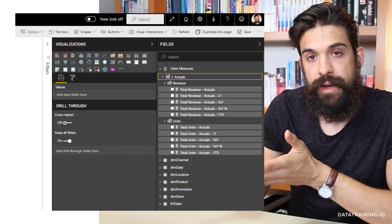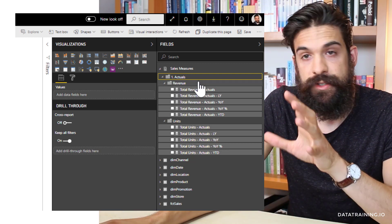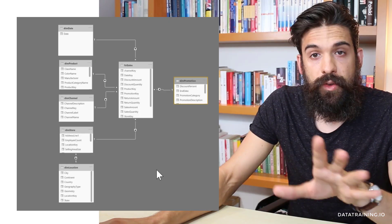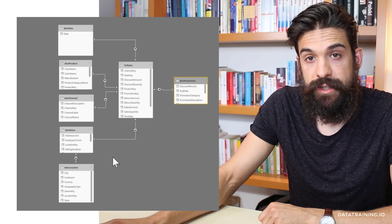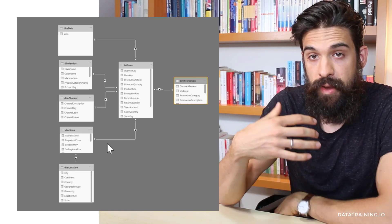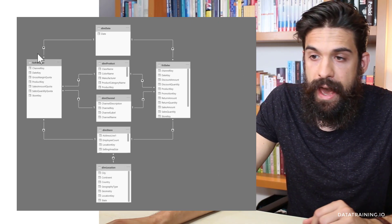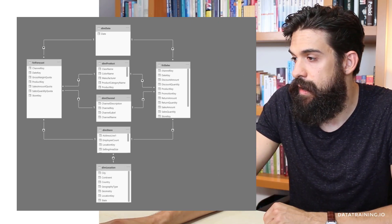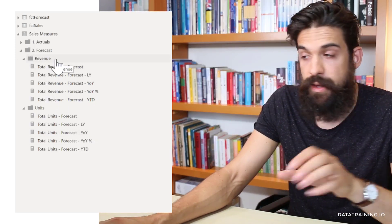Here I have a report in Power BI service with a whole bunch of measures for the actual sales values and units. In the backend, we have our sales table, a promotion table, and different dimensions around it. Now let's say I also have a local version of that file to which I made some changes — for example, I added a forecast table and got rid of the promotion table, and I also added a whole bunch of new measures for the forecast.